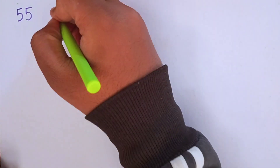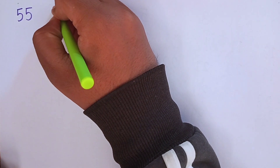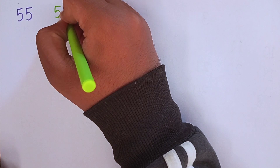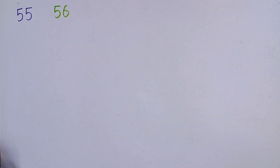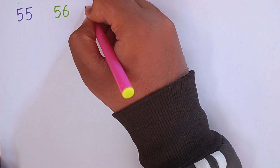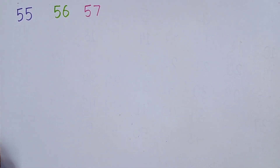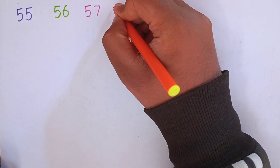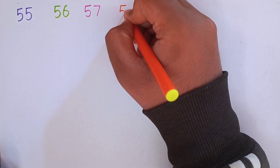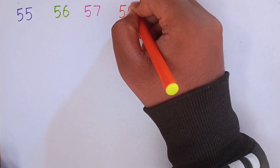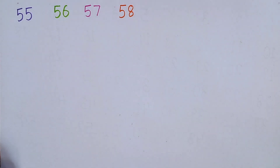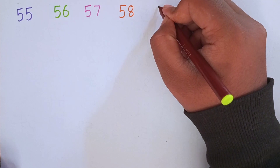After 55, the next number will be 56. Now I am writing 56. 5, 6 — 56. This is 56. After 56, the next number will be 57. 5, 7 — 57. This is 57. After 57, the next number will be 58. 5, 8 — 58. So again, repeat with me: 55, 56, 57, 58.